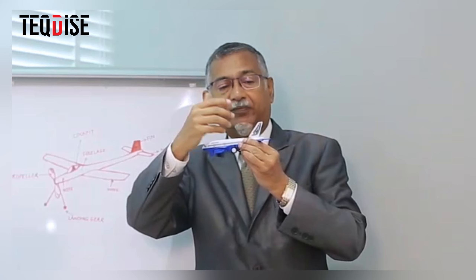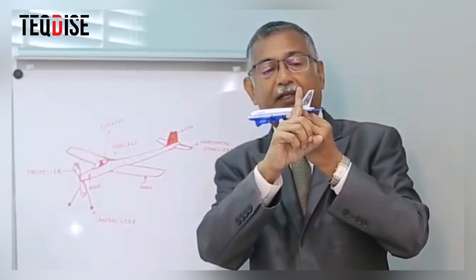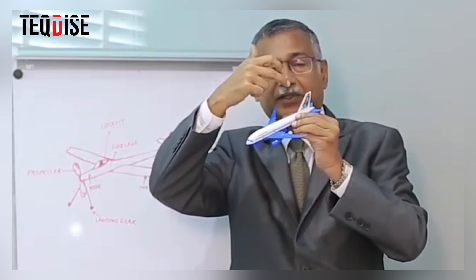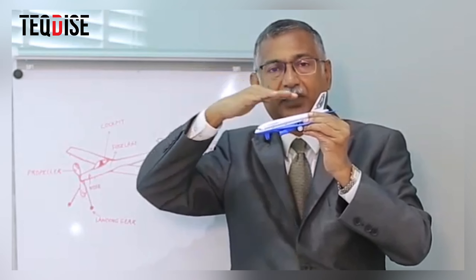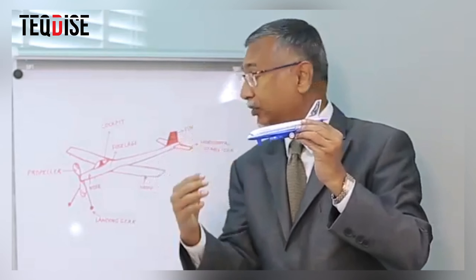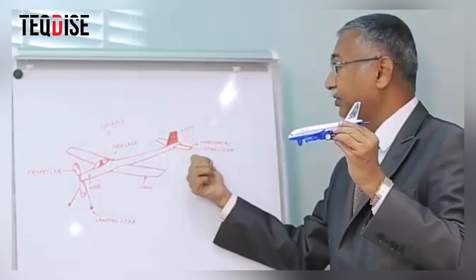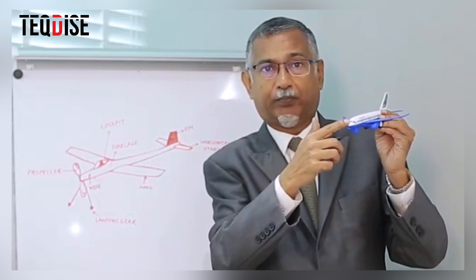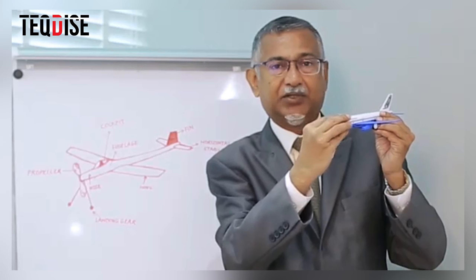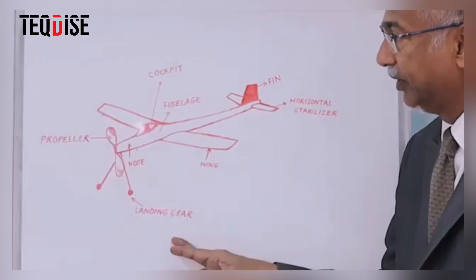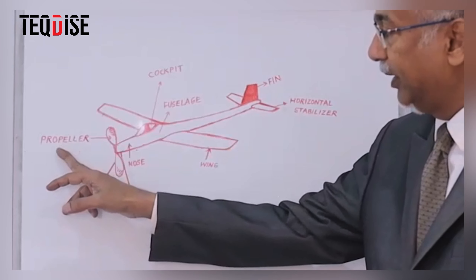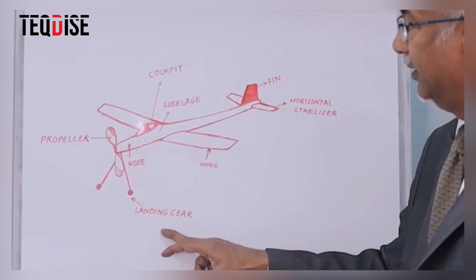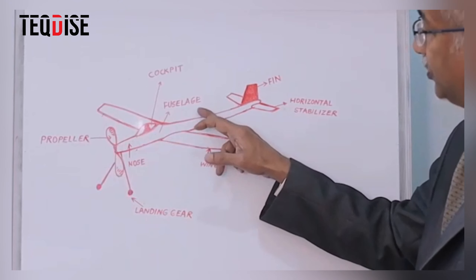On the back side of the aircraft you have the vertical piece called the fin — this white piece here — and these two small horizontal pieces are referred to as the stabilizer. The front position where the pilot sits is called the cockpit, and this area in general is called the nose of the aircraft.